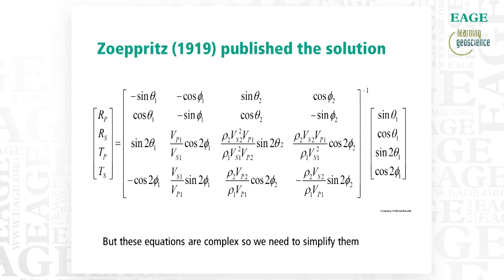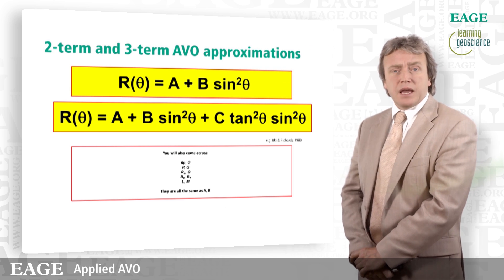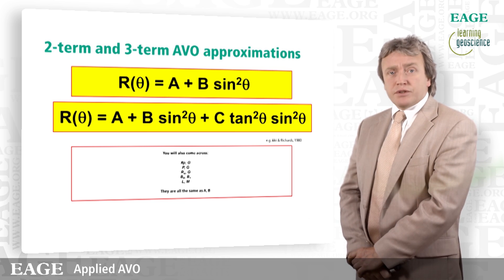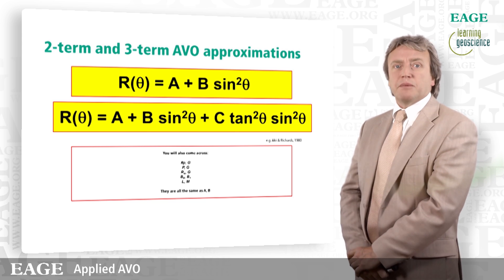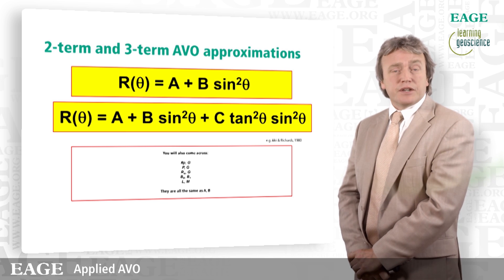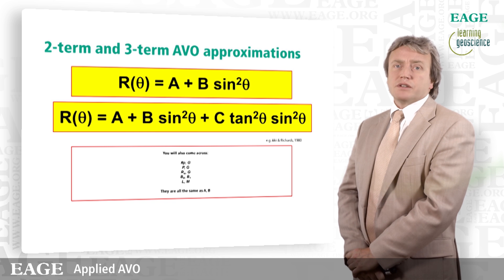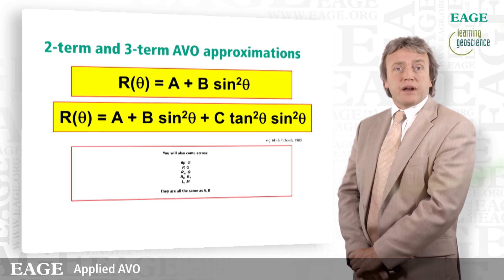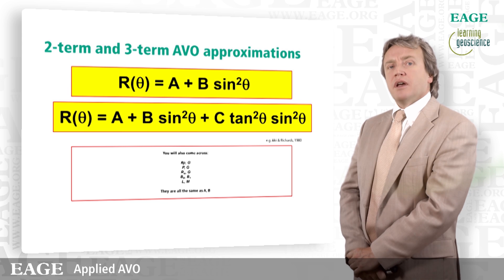These complex equations have been simplified by many authors over the years. Here we see the two generic references for the AVO approximations. The upper equation is R(θ) = A + B sin²θ. If you think back to your high school days, that is actually a linear regression: Y = MX + C. So the reflectivity at an angle theta equals the intercept plus the gradient times sine squared of theta. A linear regression is something we can very easily apply in geophysics — measuring things off our seismic data by just drawing a straight line through it. It tells us the true reflectivity at zero offset and the gradient term — how much that reflectivity changes with angle of incidence.